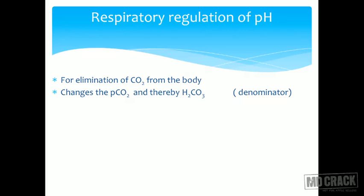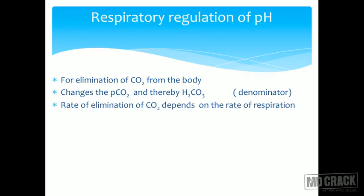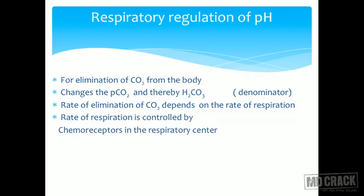As far as pH is concerned, the denominator is what is regulated. The rate of elimination of carbon dioxide — how much CO2 is to go out of the body — depends on the rate of respiration. More you respire, more carbon dioxide is thrown out. This rate of respiration is controlled by the chemoreceptors in the respiratory center. They are sensitive to acid-base balance, to protons, and to the carbon dioxide concentration.